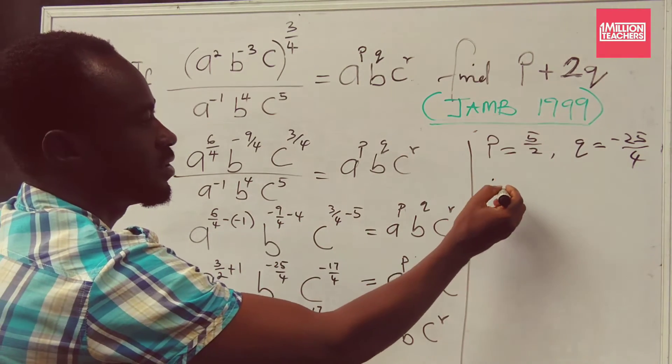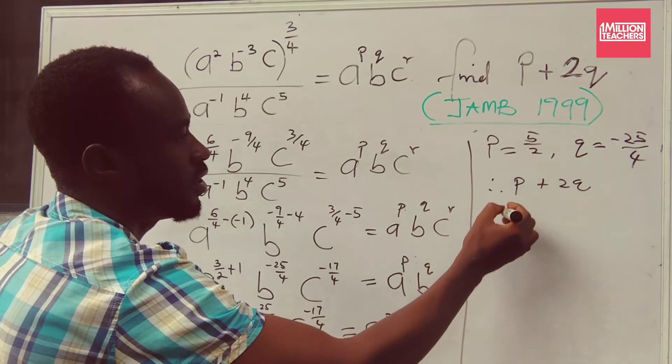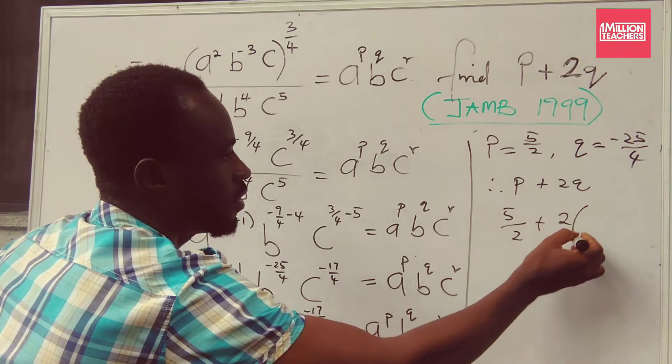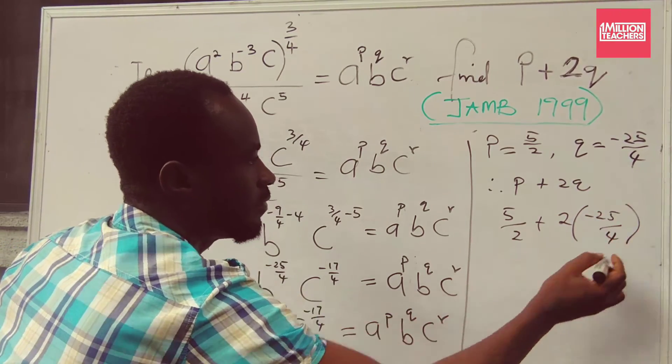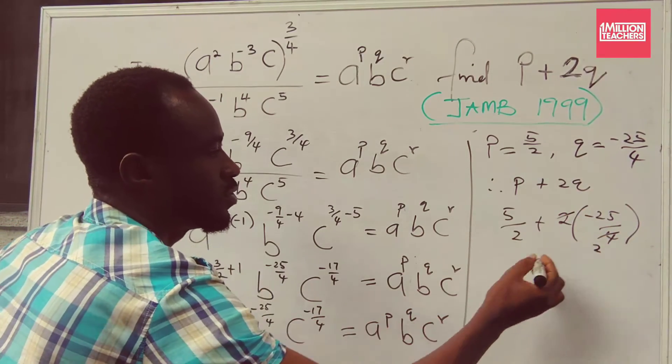So we are asked to find P plus 2Q. And our P is 5 over 2 plus 2. Our Q is minus 25 over 4. Now if these two cancel this, we are left with 2. So I'm having 5 over 2.